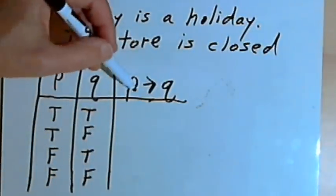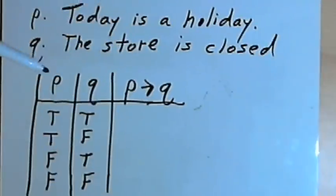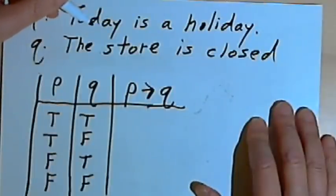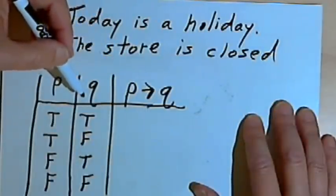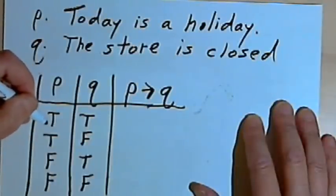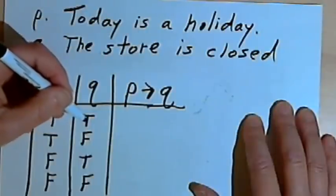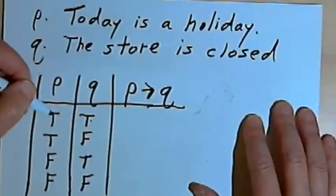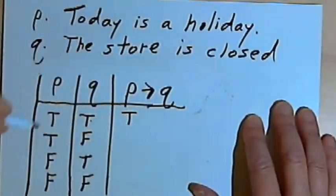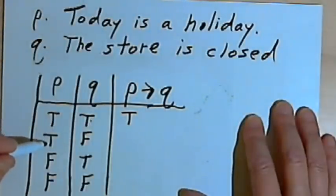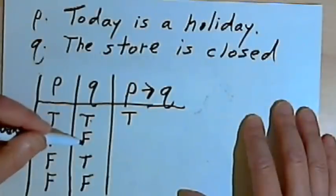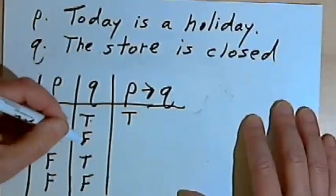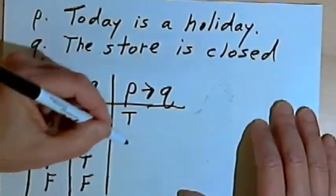Let's determine the truth values for 'if P, then Q,' thinking in terms of: if today is a holiday, then the store is closed. If today is in fact a holiday and the store is closed, my expectation has been met — so this is true. If today is a holiday and the store is not closed, my expectation has not been met — so this is false.